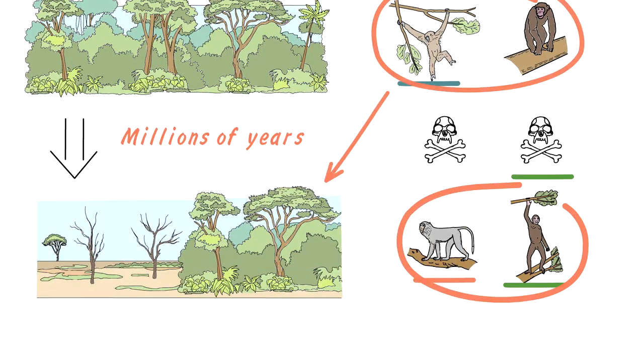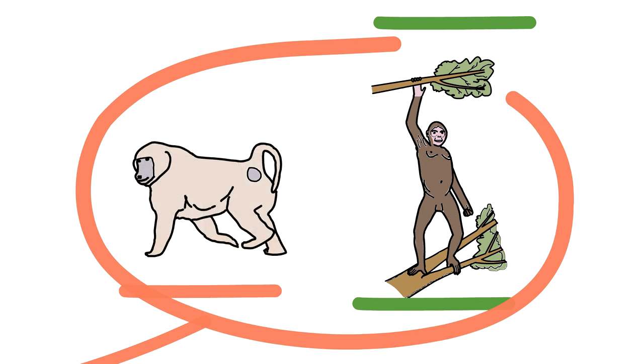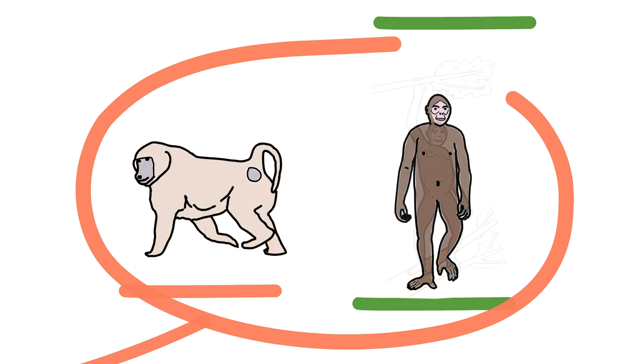Some apes started to explore the vast plains that replaced forests. Those that used all fours to move around tree branches continued to do so, but on the ground. The ones that used their hands started to walk the earth, stepping on foot.